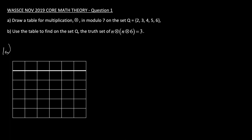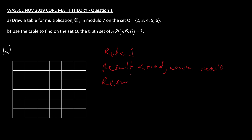In modulo there are two rules you should pay attention to. Rule one: if the result of the operation is less than the modulo you are working in, you write the result in the box. Rule two: if the result is equal to or greater than the modulo, you divide by the modulo and then write the remainder.